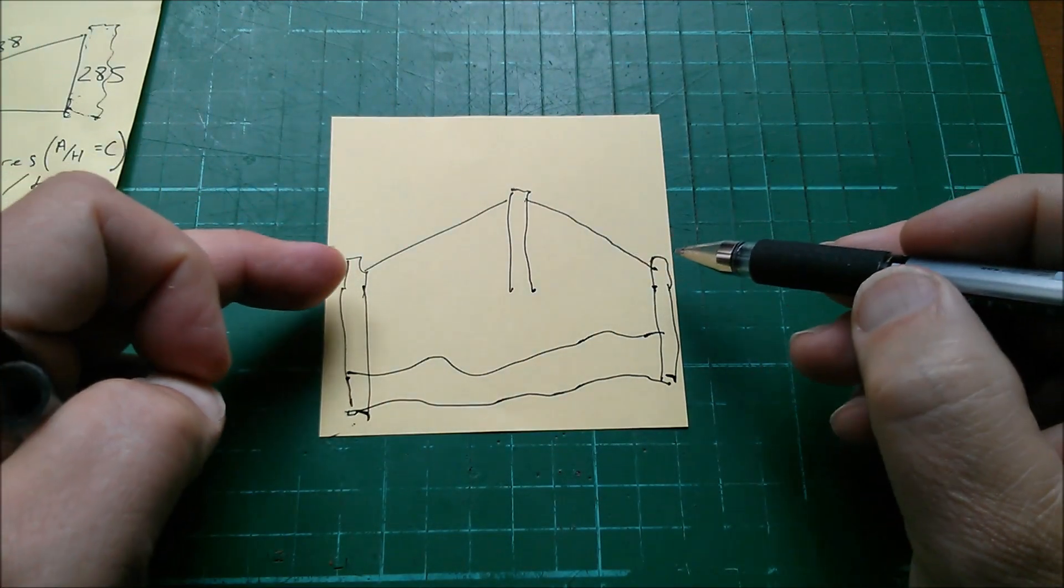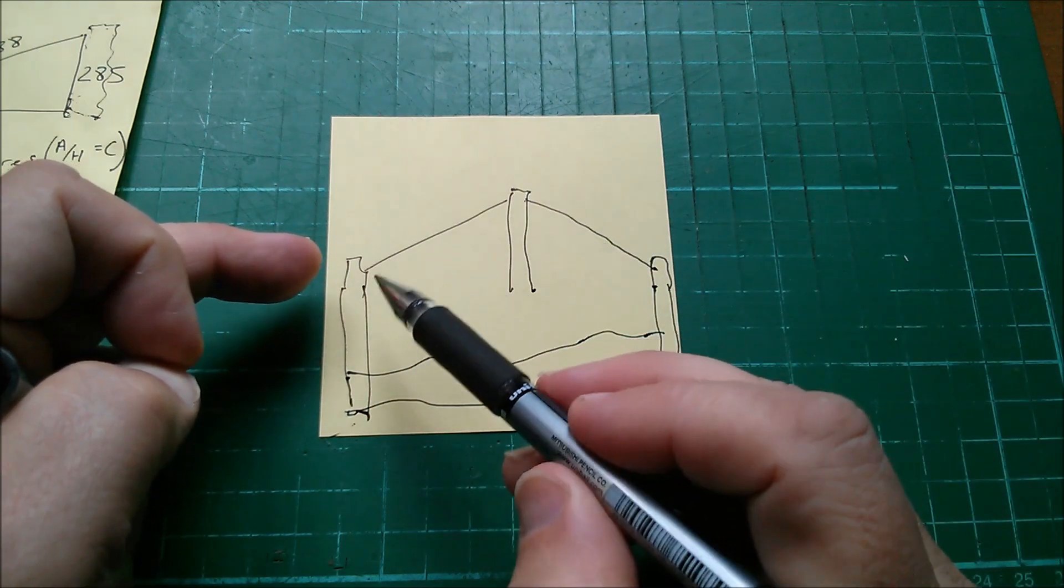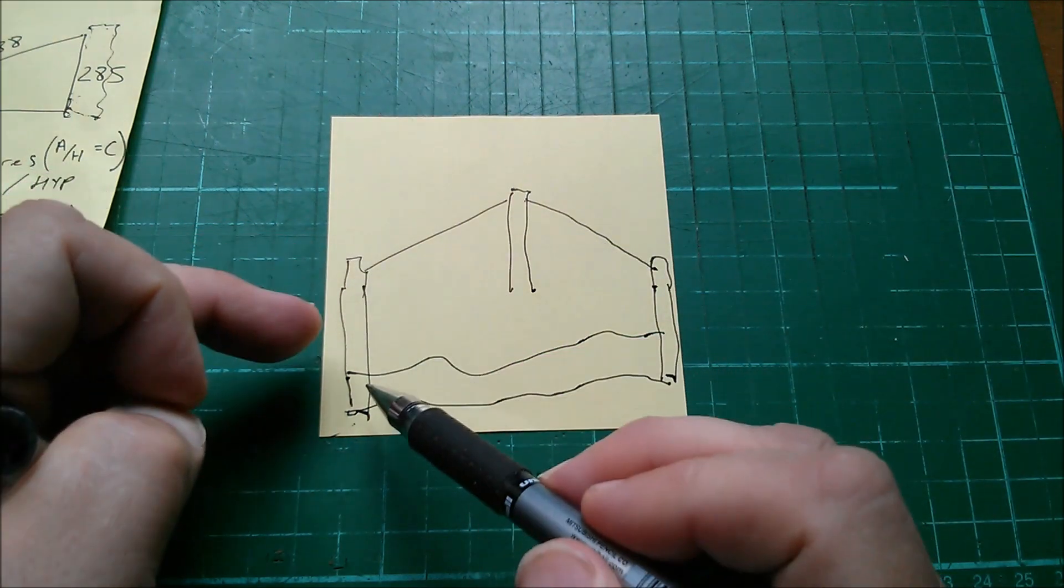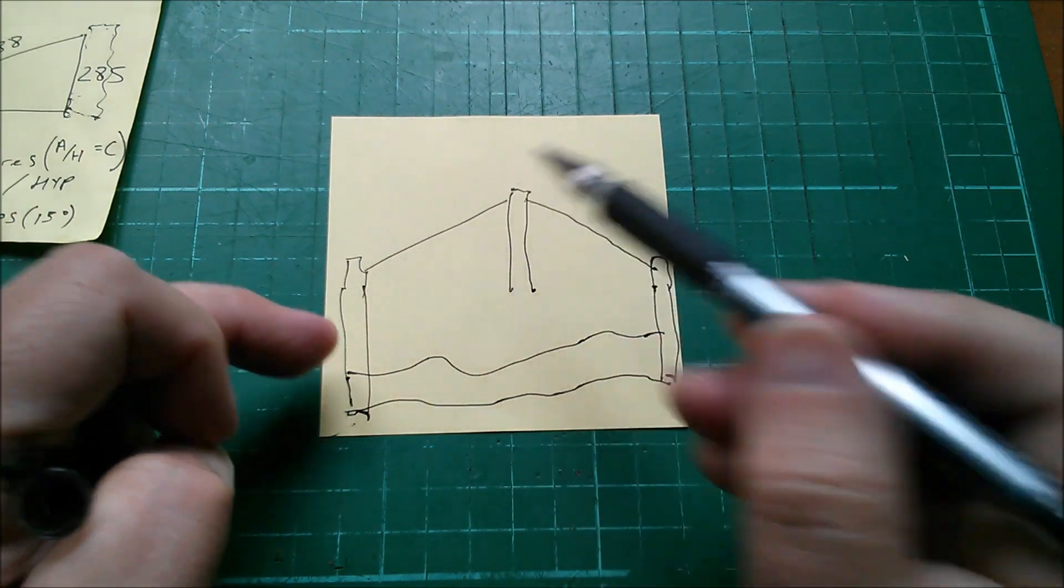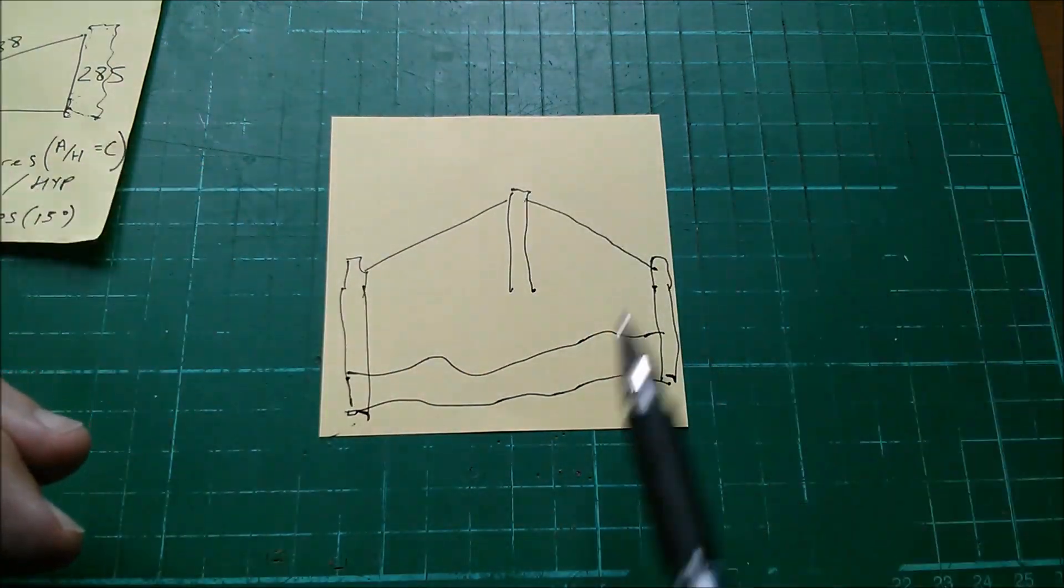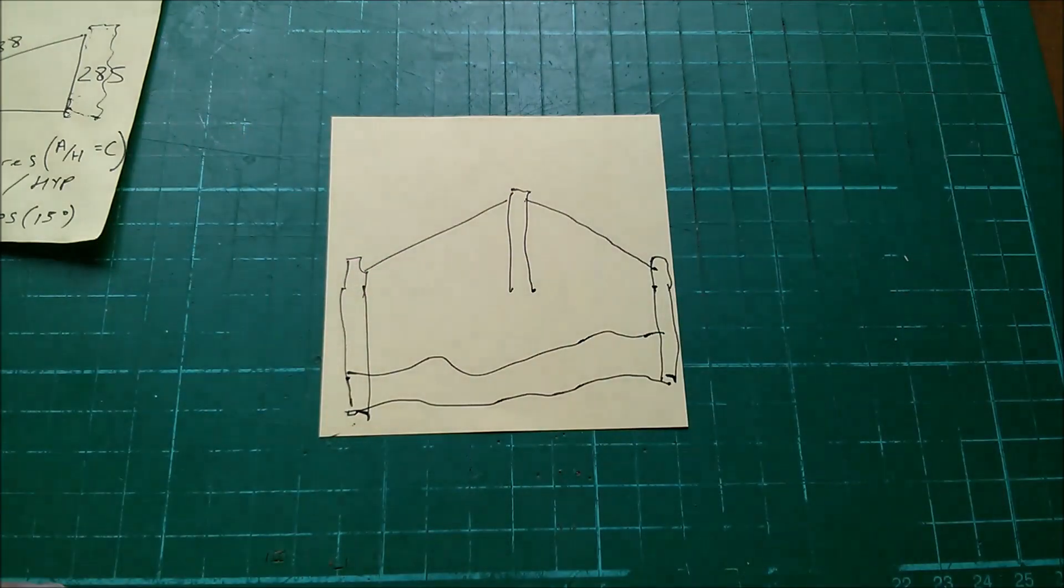So I think I've come to the conclusion that I need to measure the difference between the post, the end post height and the apex post height, and calculate an angle for each module. In fact, for each half of the module.